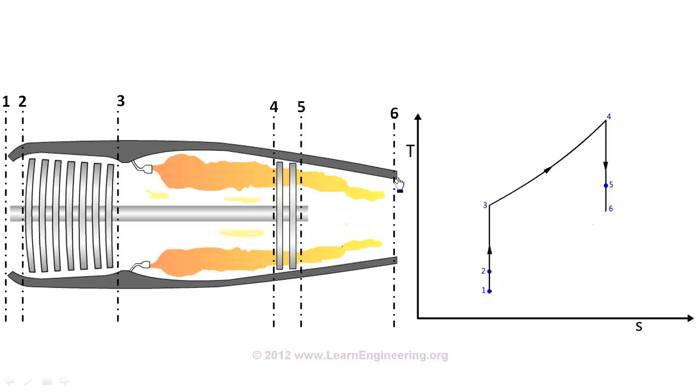It should be noted here that the exit stream never goes back to the inlet condition. At the inlet it sucks fresh stream of air in. So this is an open cycle process. But since both these points are having the same pressure, we can assume a pseudo constant pressure process like this in order to complete the cycle.